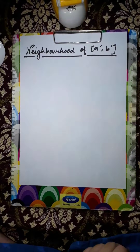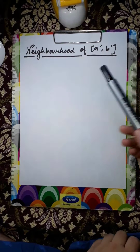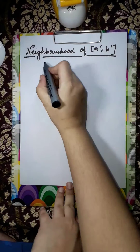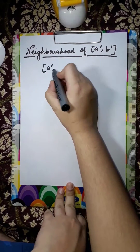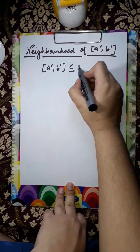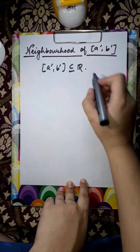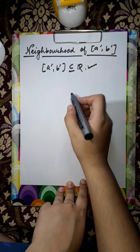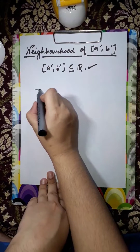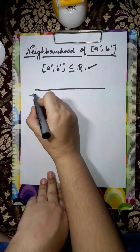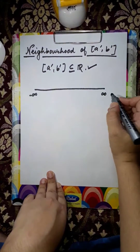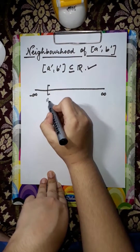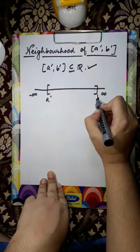Hello and welcome to Ashwara Maths Classes. In this video we will discuss the neighborhood of the closed interval [a', b']. We have already taken [a', b'] to be a subset of real numbers, so there is no need to re-verify the definition. Now we will draw a real number line from minus infinity to plus infinity and then draw the subset [a', b'] in closed brackets.